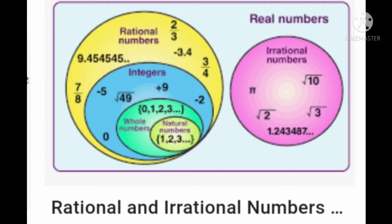Next, rational numbers. A rational number is in the form of P by Q. That is, two by three is a rational number. And also, 9.45 is also a rational number because it is in decimal form. We can convert the decimal form into a fraction form. So 9.45 is also a rational number.